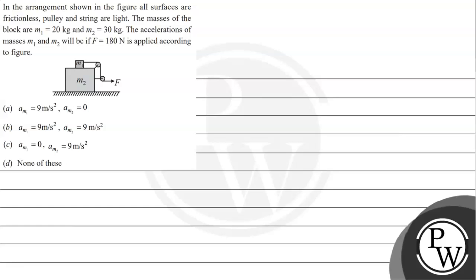Hello, let's read the given question. The question says in the arrangement shown in the figure all surfaces are frictionless, pulley and string are light. The masses of the block are M1 equals 20 kg and M2 equals 30 kg. The accelerations of masses M1 and M2 will be if F, the applied force, is 180 N applied according to the figure.